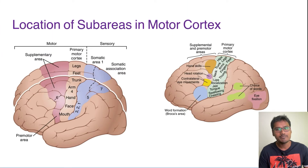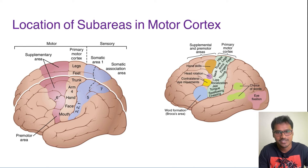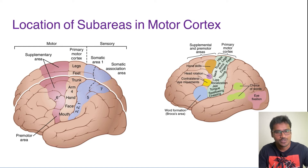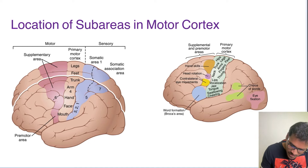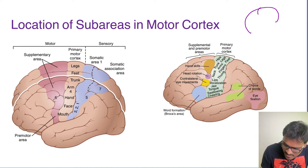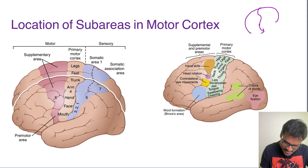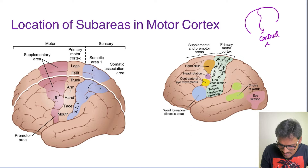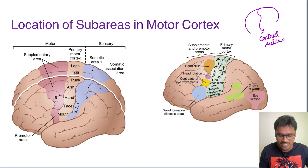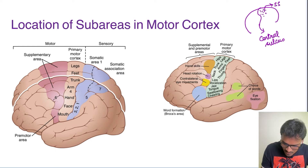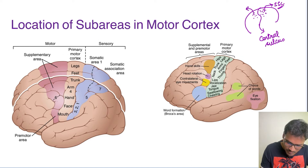Coming to the location of sub-areas in the motor cortex — the majority of the motor cortex is primarily located in the frontal lobe. In the brain there is a major sulcus called the central sulcus. Just behind the central sulcus is the somatosensory cortex, whereas just in front of the sulcus we have our motor cortex.